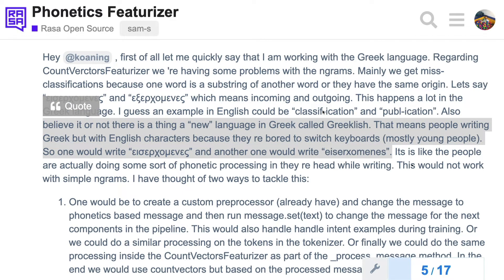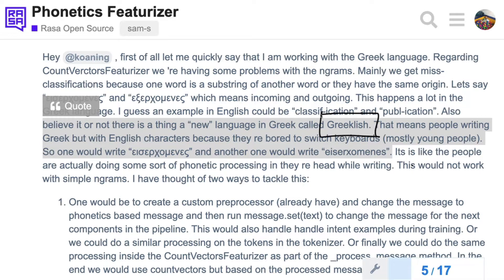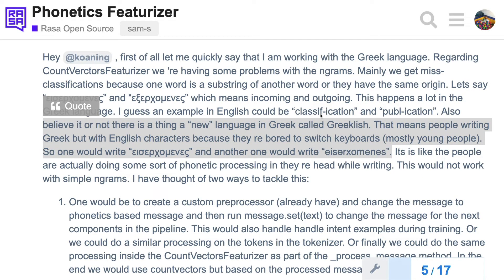And there was a specific part of the problem they were interested in solving. At some point, the user said, believe it or not, there is a new language in Greek called Greeklish. And that means people write in Greek, but in English characters because they're too bored to switch keyboards. And there's a comment that this is something that mainly happens with young people. So somebody might be interested in writing this, which is a word written in the Greek alphabet. But because they don't want to switch keyboards on their mobile phone, they might write this instead.